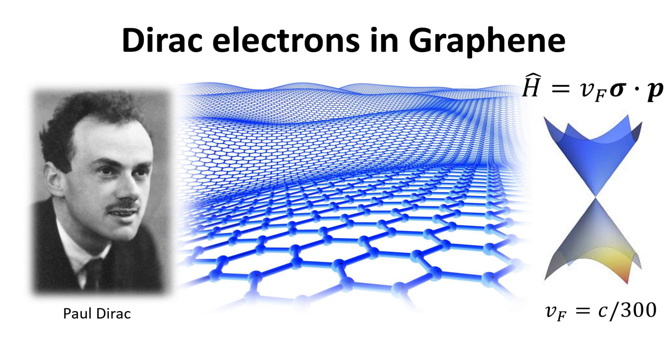Hence electrons in graphene behave as relativistic particles, a unique behavior that has enabled the study of relativistic quantum mechanical phenomena at the tabletop. Let's begin.